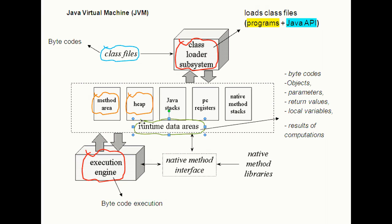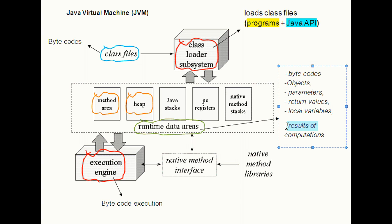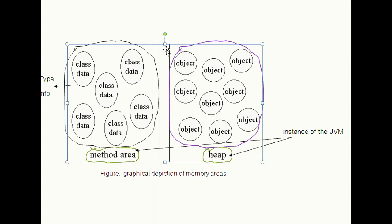Coming to runtime data areas: when the JVM runs your Java program, it needs a lot of memory to store many things, such as bytecodes and other information extracted from the loaded class files, the objects the program instantiates, parameters to methods, return values, local variables, and other results of computations. JVM organizes its memory into several runtime data areas. These data areas are shared by all the threads running inside the JVM. This figure shows memory areas of JVM, such as method area and heap memory.